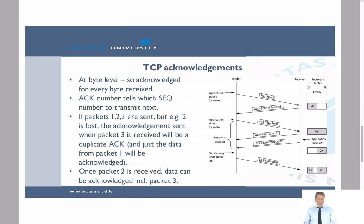It is important to notice what happens if a packet is lost. Assume that packets one, two, and three are sent but packet number two is lost in the network. When packet number three is received, the receiver sends what is called a duplicate ACK — it acknowledges only the data from packet number one. This duplicate acknowledgment tells the sender that packet number two was not correctly received. The sender then resends packet number two, and the receiver holds onto packet number three until packet number two is correctly received. Once it has packets one, two, and three, it can determine this from the sequence numbers and acknowledge that it has received all three.